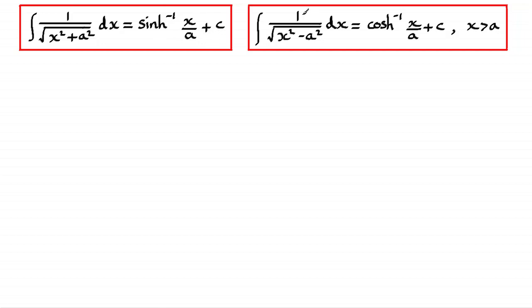I also showed you that if you were to integrate 1 over the root of x squared minus a squared with respect to x, then the result was the inverse cosh of x over a plus a constant of integration, and it was only defined for x being greater than a.